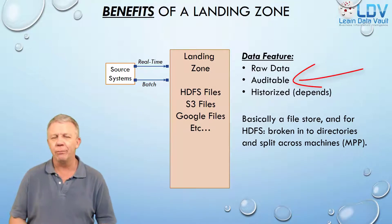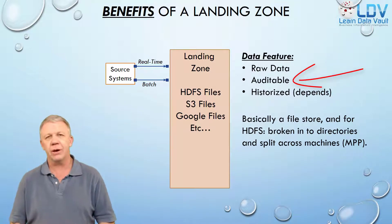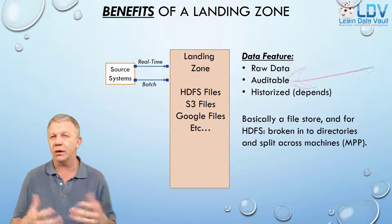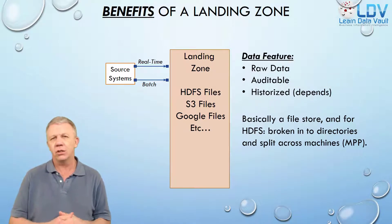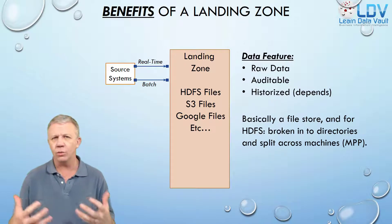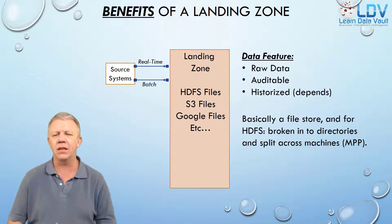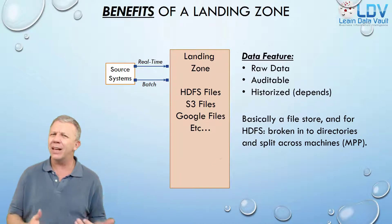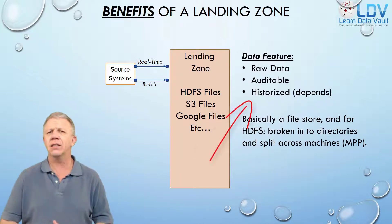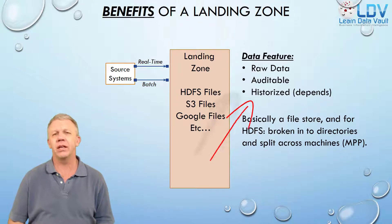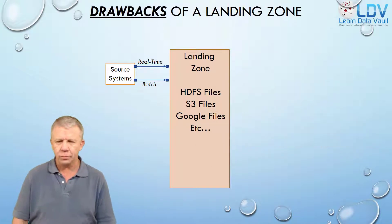It contains auditable data as long as you track it back to the source, and this is where some metadata needs to happen. You need a process that tracks where it got the data and how it copied it in. And it might or might not contain historized data, depending on whether or not you're running change data capture on the source systems.